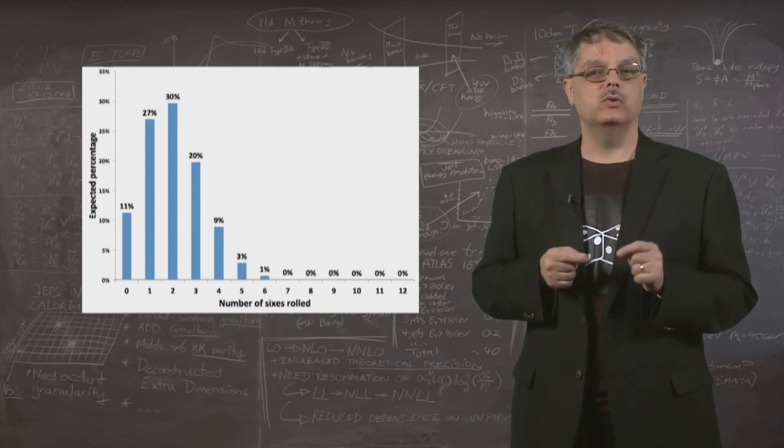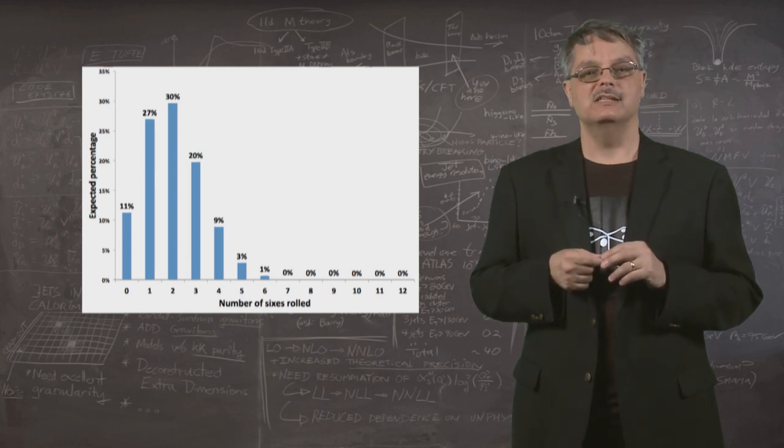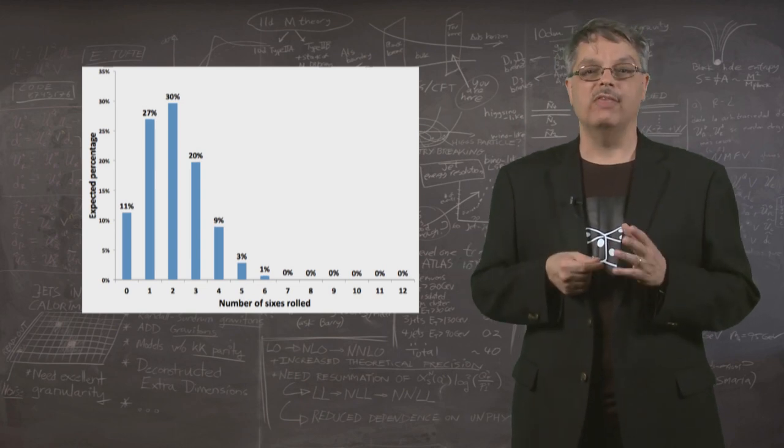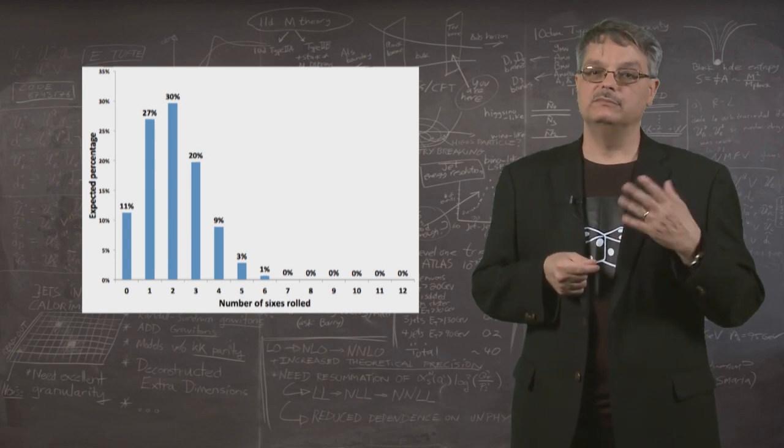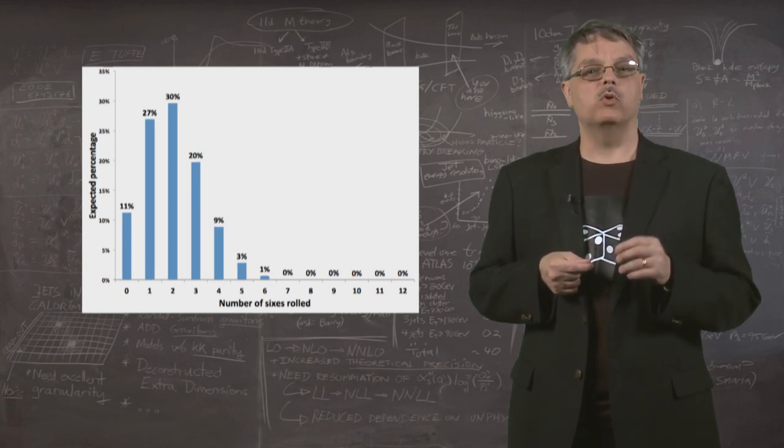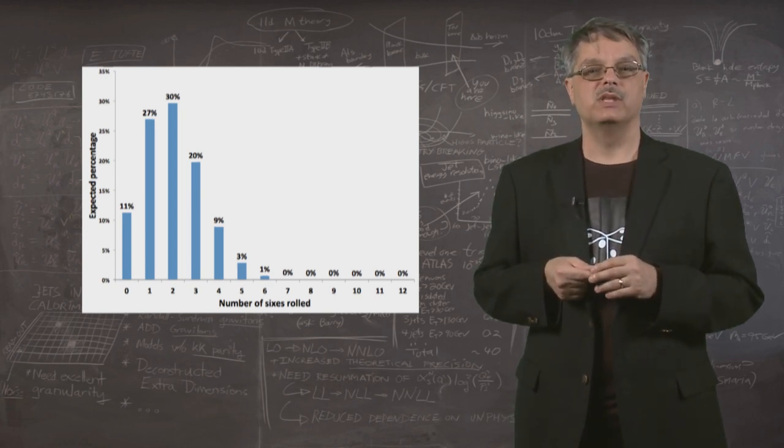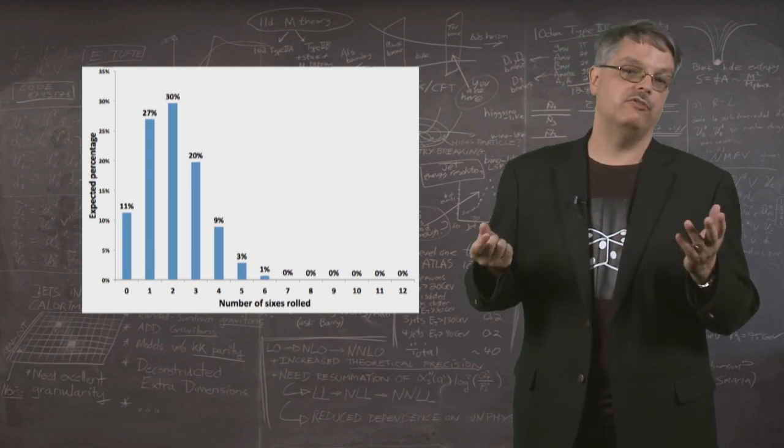To ask if a die is loaded to favor rolling a six, one question one can ask is, how likely is it to roll that many sixes or more? To do that, you have to add probabilities. For instance, there's about a 4 percent chance of rolling 5 or more sixes. So rolling a six five times is something that can happen even with a fair die.